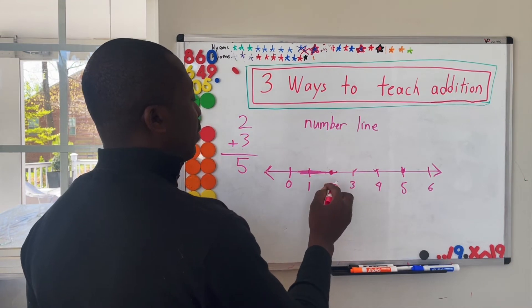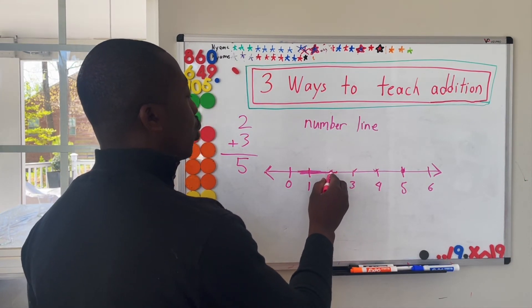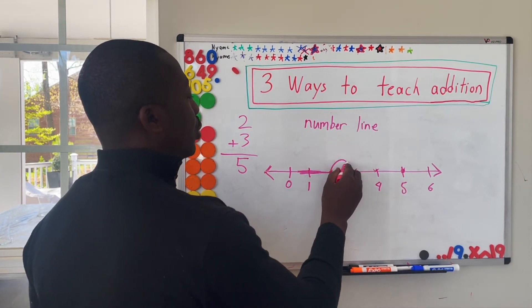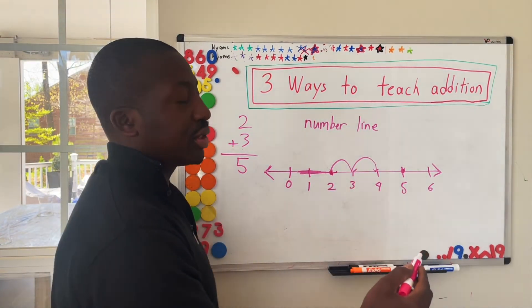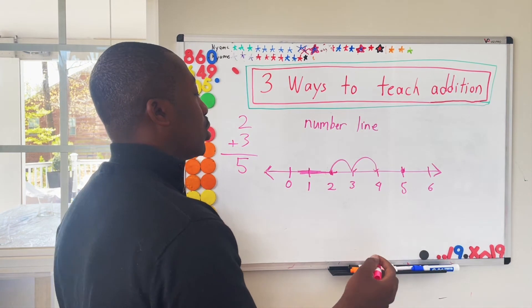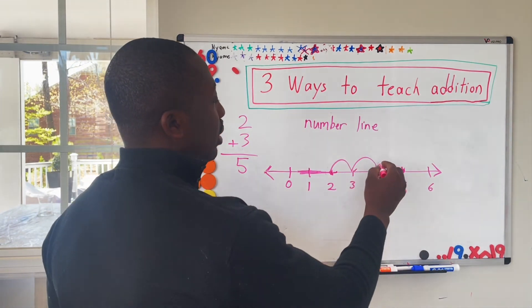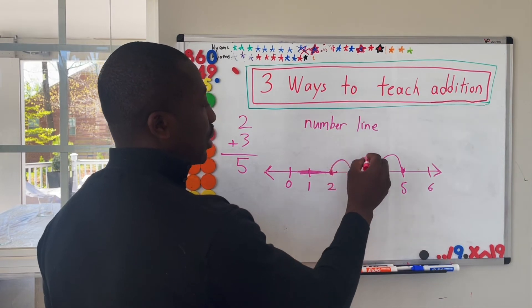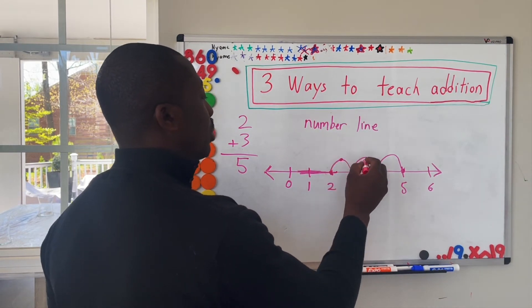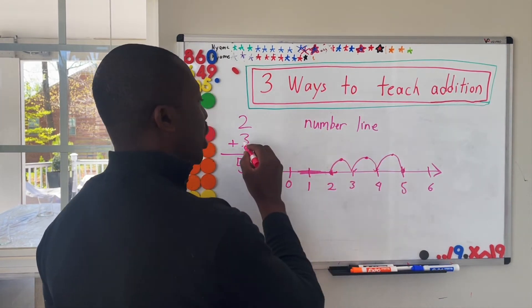So oftentimes what I ended up doing was showing them how to count the peaks. Because each peak represented a count. So this is one peak, one, this is two, and this is three to make sure that that matched.